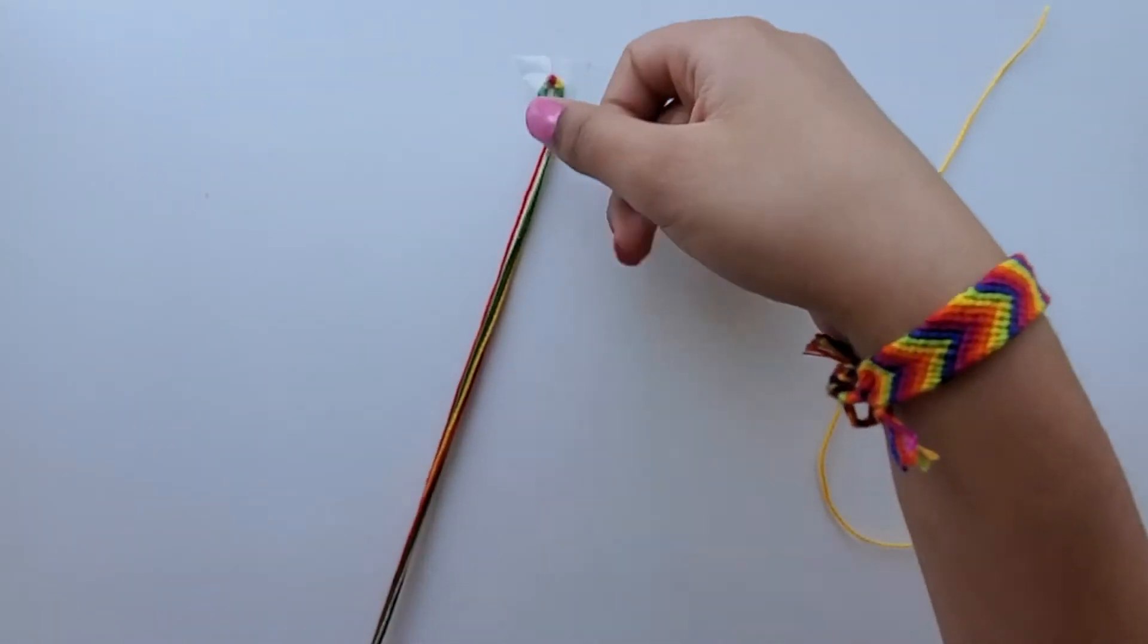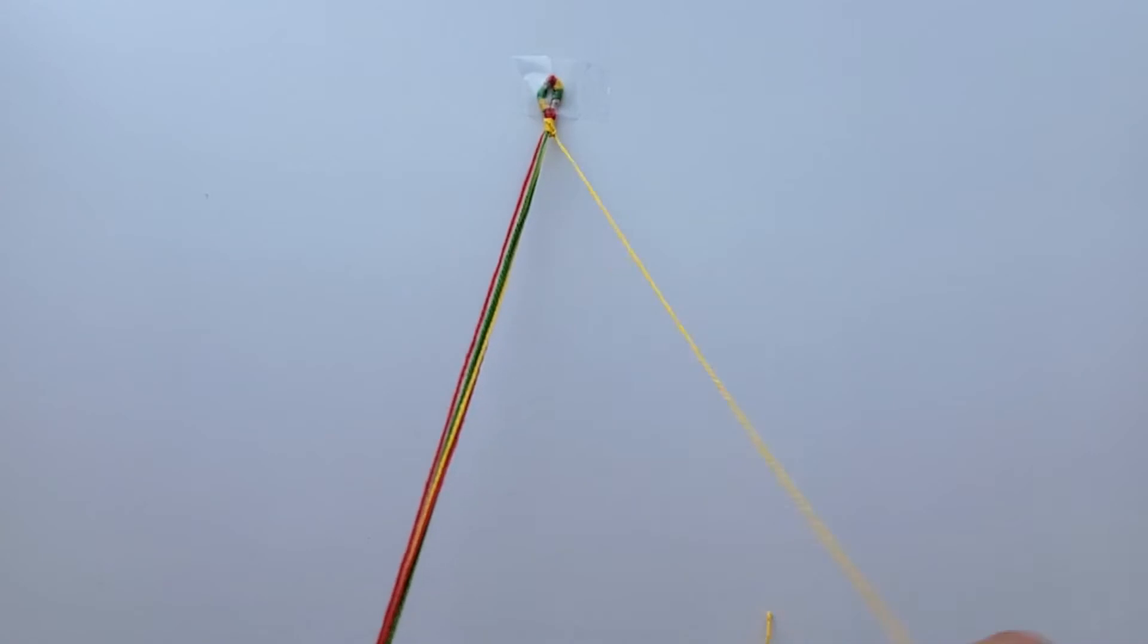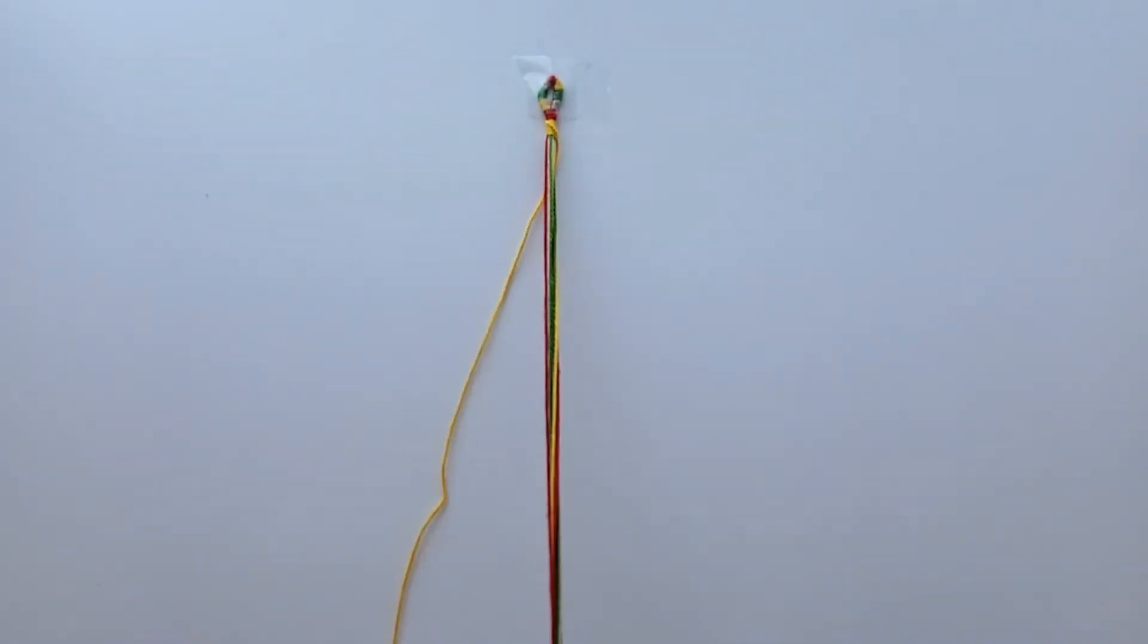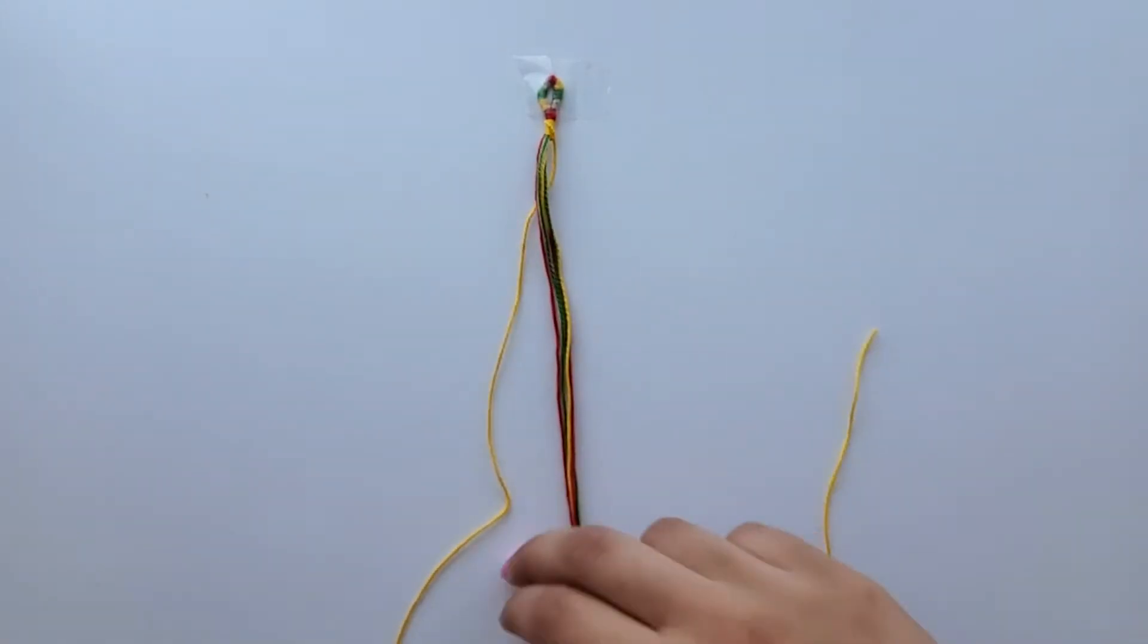And then to keep the spiral moving smoothly, I like to take the left string that I was making forward knots with and pull it under the other strings. Then continue the forward knots.